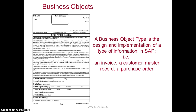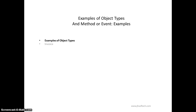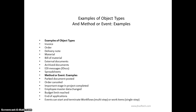A business object type is the design and implementation of a type of information in SAP. Examples include an invoice, a customer master record, and a purchase order. Methods or events include invoice, order, and delivery note. Business objects are also called BOR objects. Examples of events include: a document being parked (parking a document is an event), an order being cancelled, a project stage being completed, an employee master data being changed, a budget limit being reached, or an application ending. Events can start and terminate workflows.